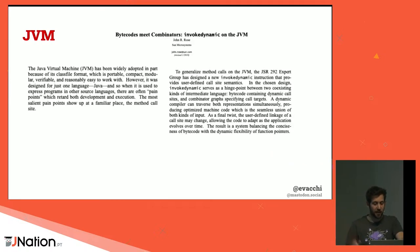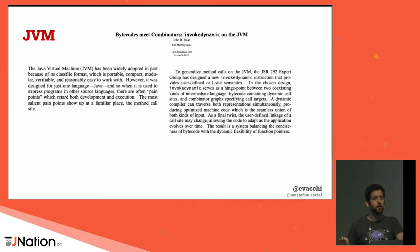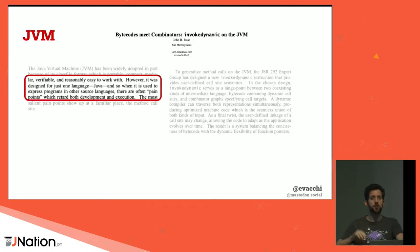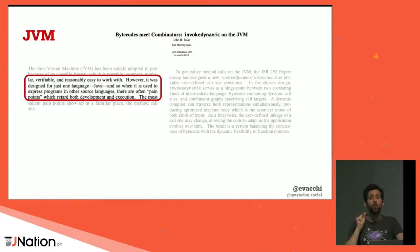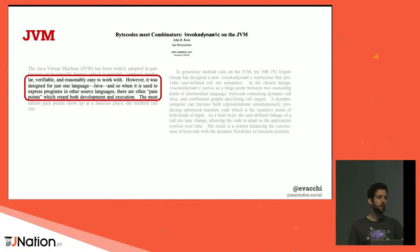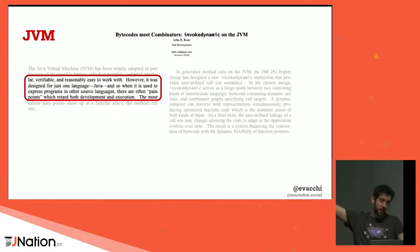There's actually a paper on this — 'Bytecodes meet Combinators: invokedynamic on the JVM' — which introduced the invokedynamic instruction specifically to support dynamic languages like Groovy, JRuby, and Jython. It says in the abstract: 'the JVM was designed for just one language, Java, and when it is used to express programs in other source languages, there are often pain points.' That's John R. Rose from Sun Microsystems and Oracle — not me saying it.